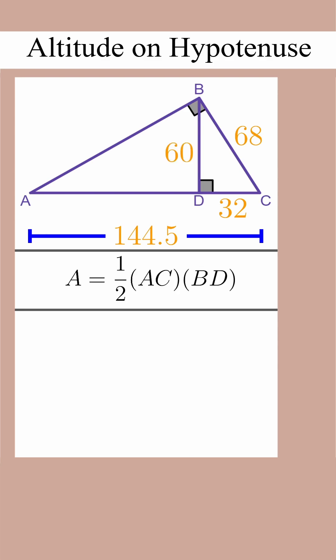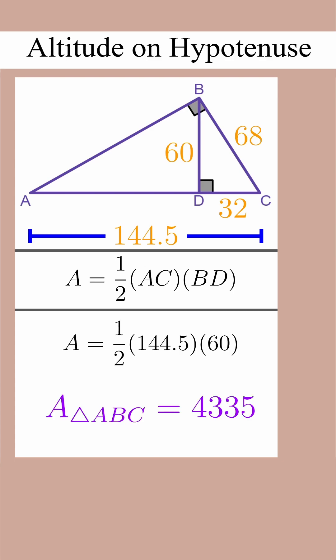Finally, we'll compute the area using one-half base times height. We see that the area of triangle ABC is equal to 4335.